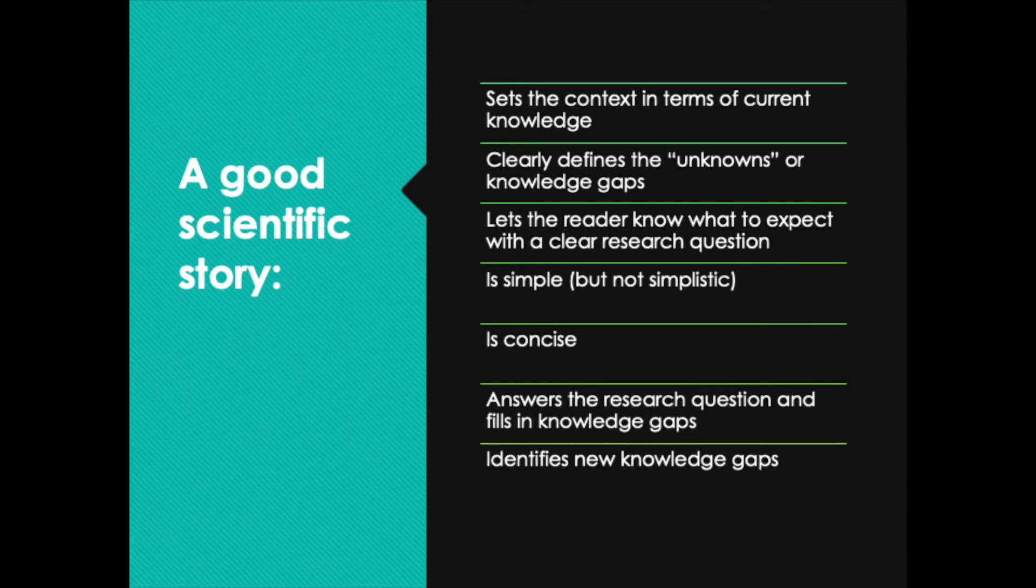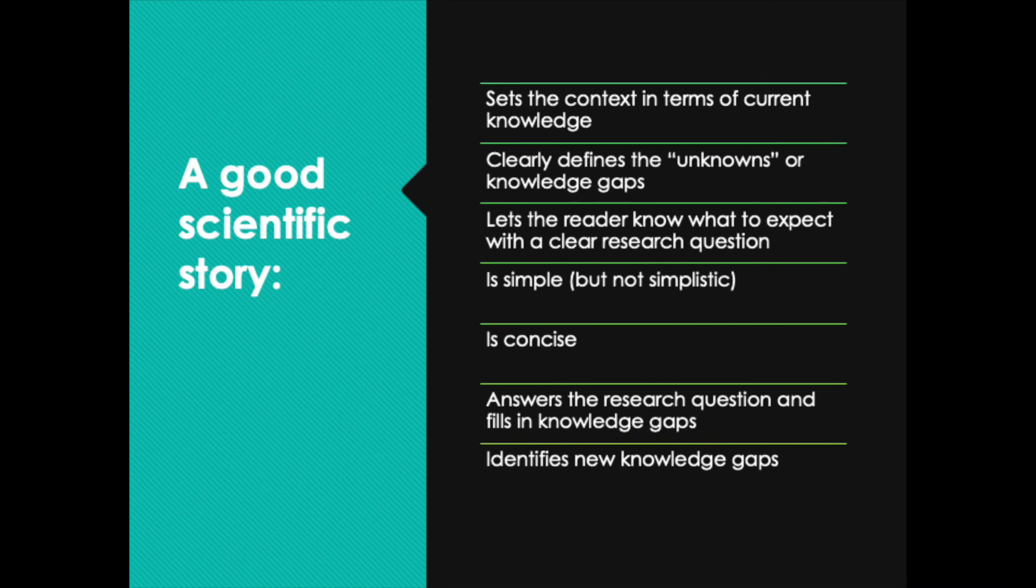Let's talk about how to structure a good scientific story. It's going to set the context in terms of current knowledge. It's going to clearly define the unknowns or the knowledge gaps that will be addressed in that study. And it's going to let the reader know what to expect by having a clear research question. It's going to be simple but not simplistic. As scientists we really like to overcomplicate things. It seems to be in our DNA. But when you sit down to write your paper make sure that you're not overcomplicating things. You know, simplify it as much as possible so that you can have a nice simple story. Additionally a good scientific paper is going to be concise. That means it's no longer than it needs to be.